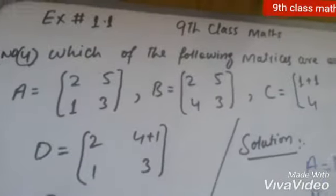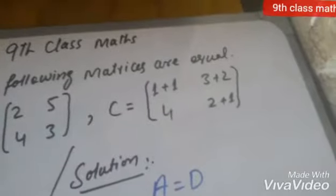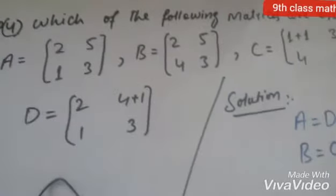A matrix is 2, 5, 1, 3. B matrix 2, 5, 4, 3. C matrix 1 plus 1, 3 plus 2, 4, 2 plus 1. And D matrix 2, 4 plus 1, 1, 3.